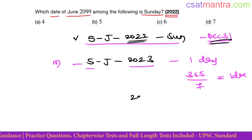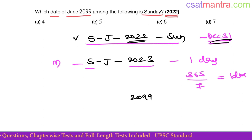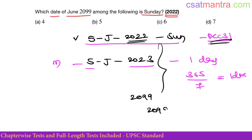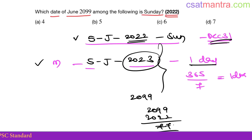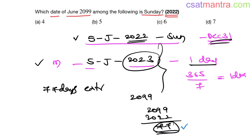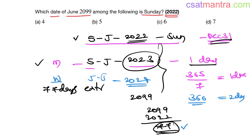Now, for 2099, how many years do we have in between? 2099 minus 2022 equals 77 years. One year gives one extra day, so 77 years gives 77 extra days. But in these 77 years you also have leap years — just like 2024, which has 366 days and gives 2 extra days. So 5th June 2024 would be Wednesday, not Tuesday.